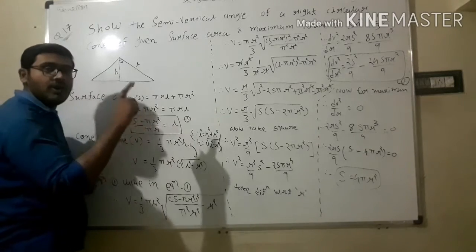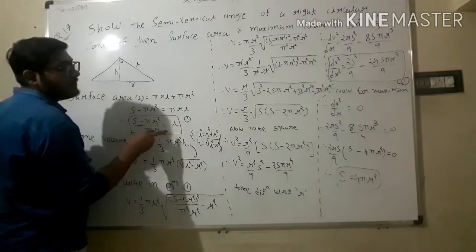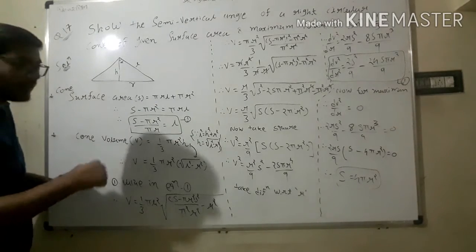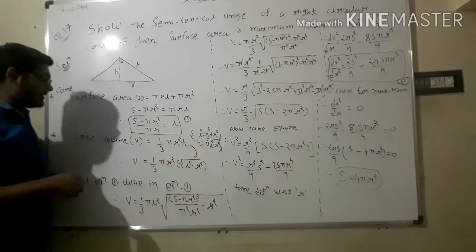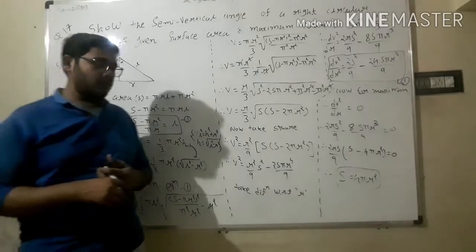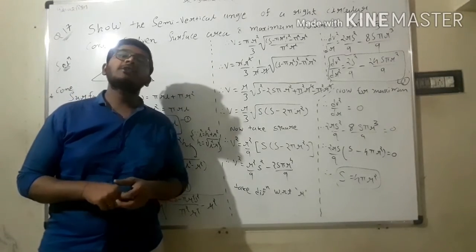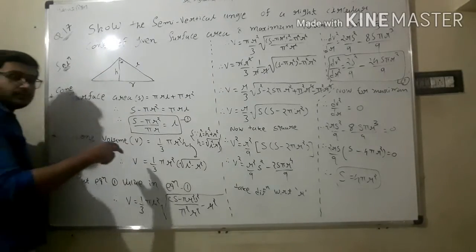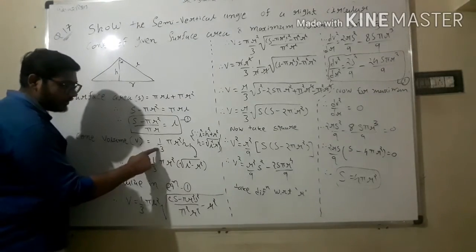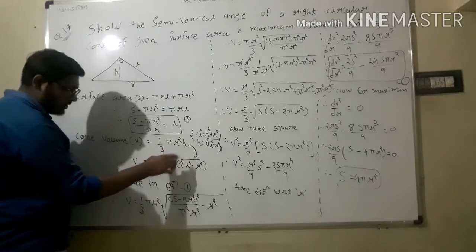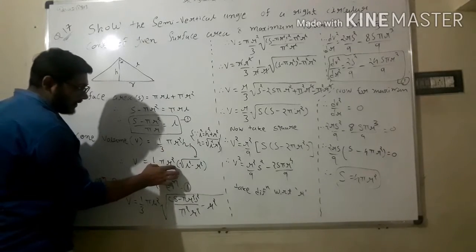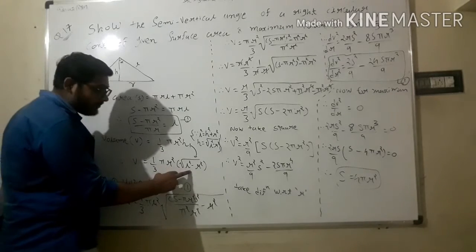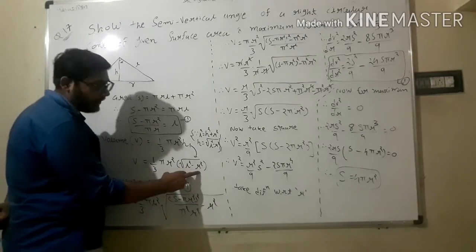Now, what is the volume of a cone? It is (1/3)πr²h. We take V = (1/3)πr²h, and since h = √(l² - r²), we substitute to get V = (1/3)πr² · √(l² - r²).